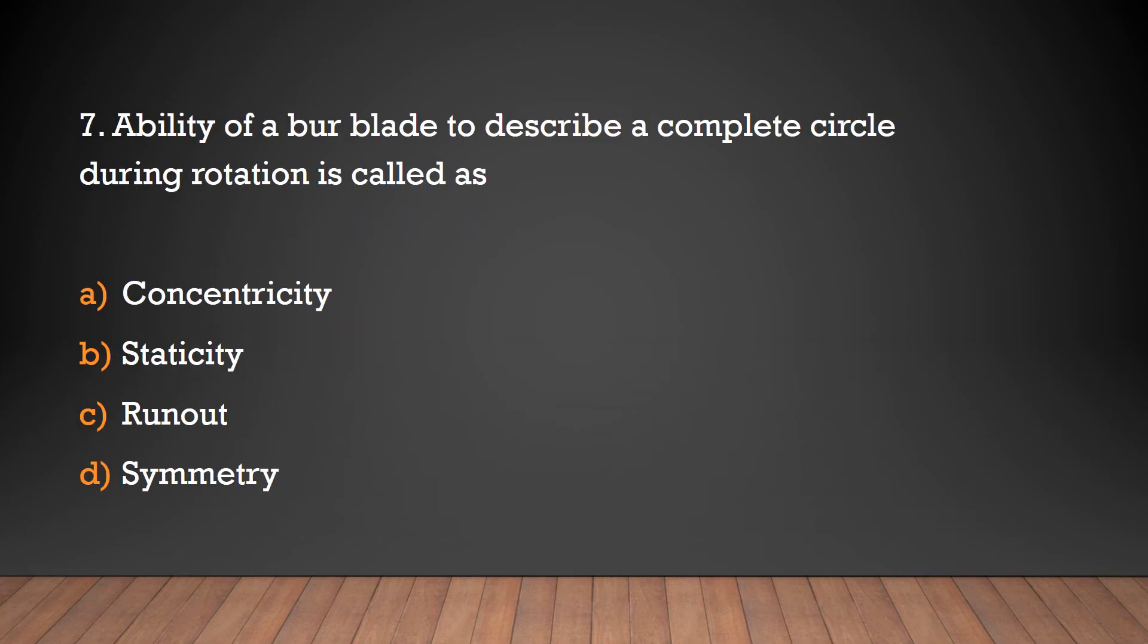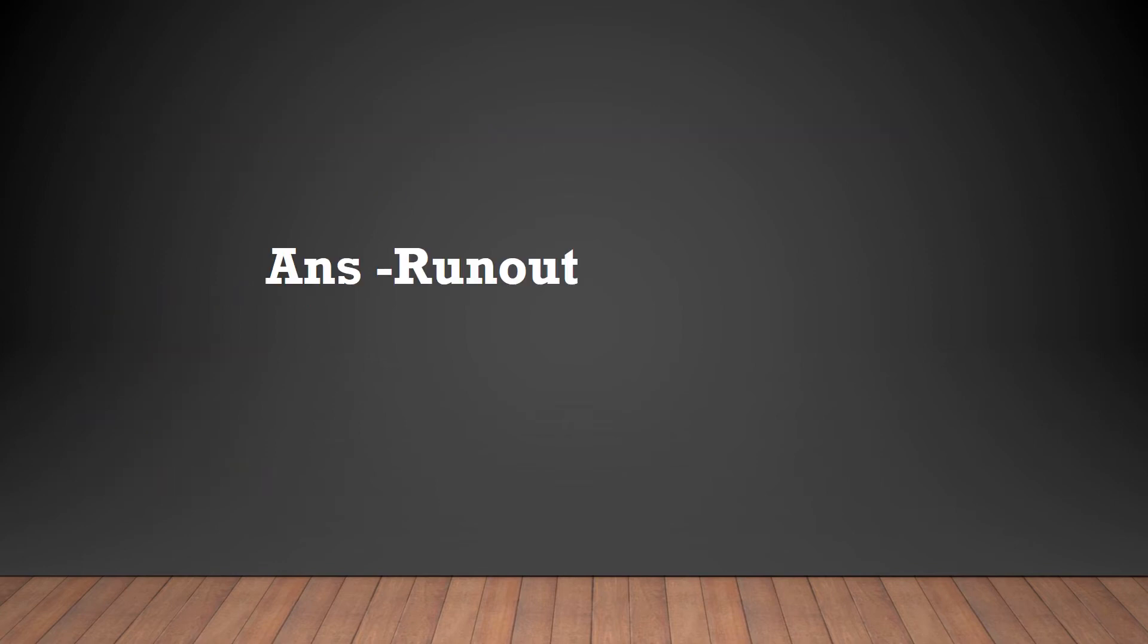Question 7: The ability of a bur line to describe a complete circle during rotation is called concentricity, staticity, runout, or symmetry? Answer: runout.